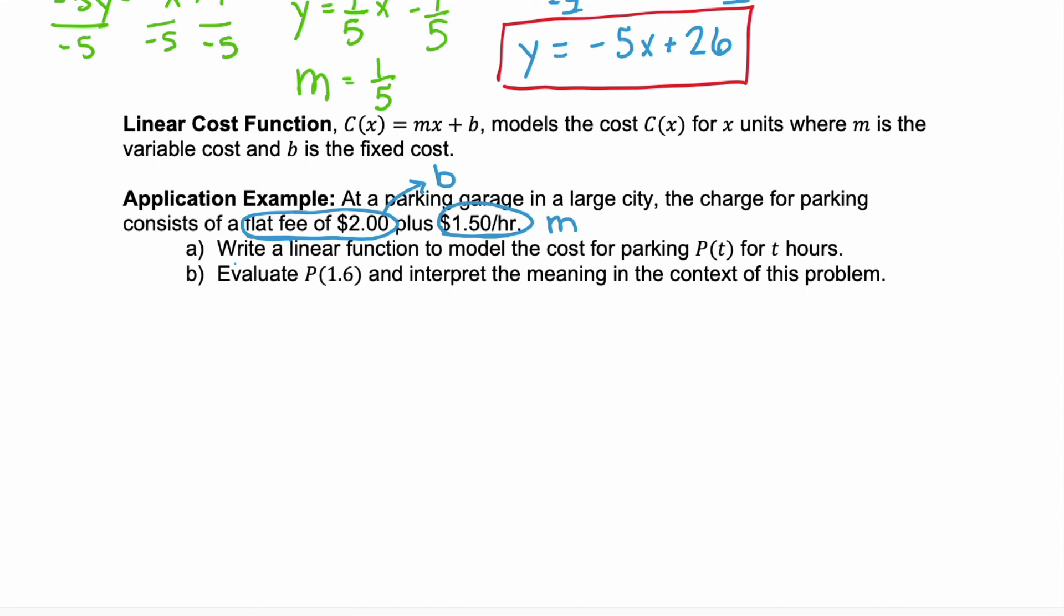For part a, we want to write a linear function to model the cost for parking p of t for t hours. So p of t would equal our variable cost, $1.50, times the units, that's per hour, plus a fixed cost, which is the $2 flat fee.